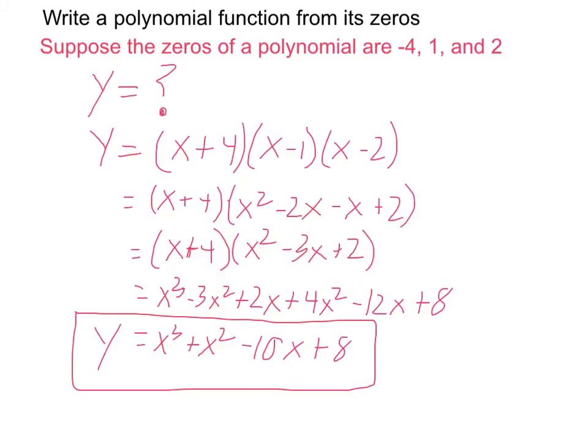So in standard form, y is equal to x cubed. There's only one x cubed term. Then I put together my x squared terms, and I get a positive 1 x squared. I put together my x terms, and that gives me a negative 10x, and only one constant, so that gives me the 8.